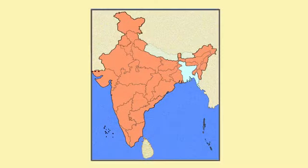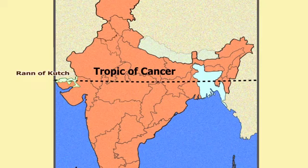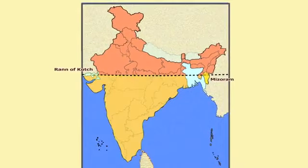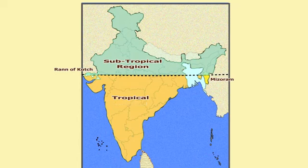Coming to India, the Tropic of Cancer passes through the middle of the country — from Rann of Kutch in the west to Mizoram in the east. Almost half of the country lying to the south of the Tropic of Cancer belongs to the tropical area, whereas the remaining area in the north lies in the subtropical area. Therefore, India's climate has characteristics of both tropical and subtropical climates.